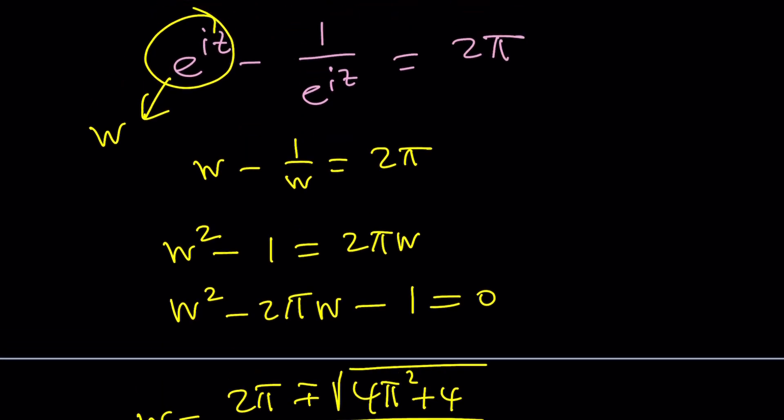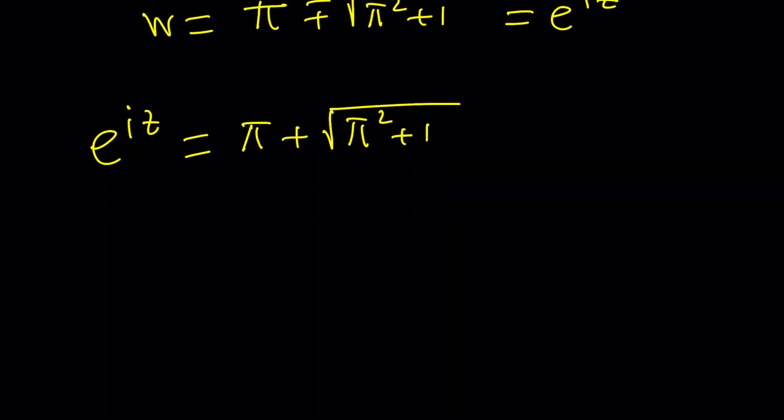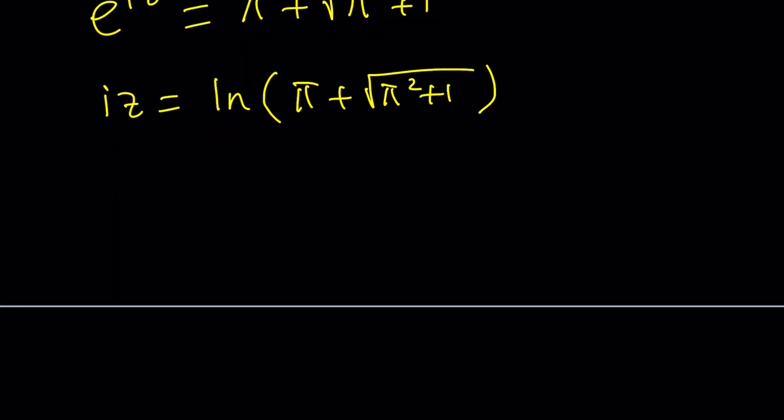Here's the fun part. What is w? w is e to the iz. So let's set it equal to e to the iz and solve for z because that's our goal. e to the iz equals pi plus square root of pi squared plus 1. Now, what am I going to do? I need to natural log both sides. So iz is going to be ln pi plus the square root of pi squared plus 1. Notice that this is a real valued ln. I'm just going to multiply both sides by negative i. When you do, you're going to get something like this. That's going to be one of the answers.